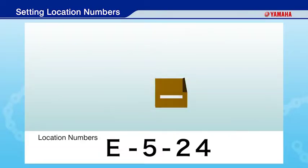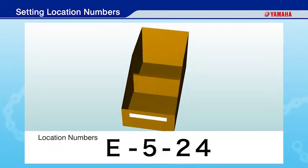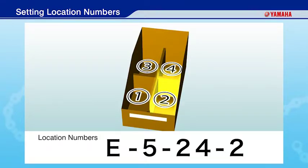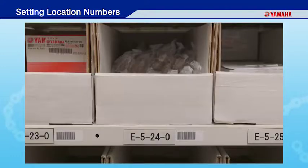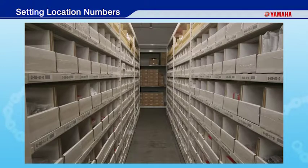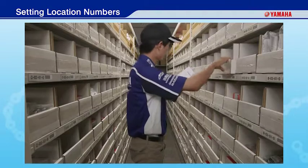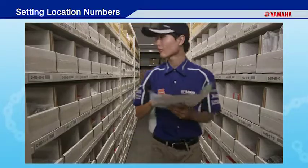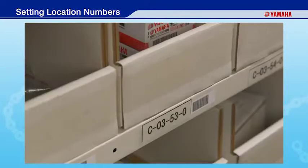For bins that have been partitioned to hold extra-small items, number each partition left to right, then front to back, with the front-left partition as number 1. Location numbers for partitioned bins will therefore have an extra digit. Now each bin has a location number. Assigning location numbers gives you an accurate understanding of where parts are located, reducing time spent searching and improving work efficiency.